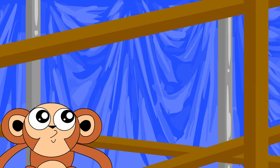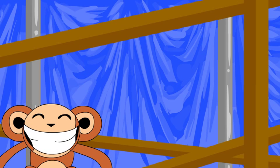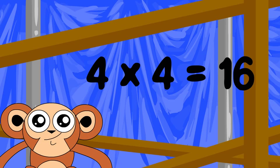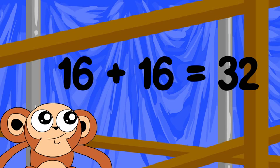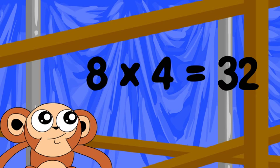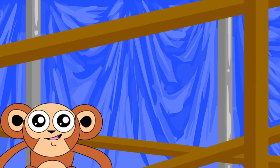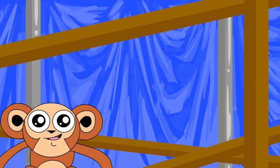Join in. Say the 4x fact, then double the product to say the 8x fact. Ready? 4 times 4 is 16. Double 16 is 32. So 8 times 4 is 32.